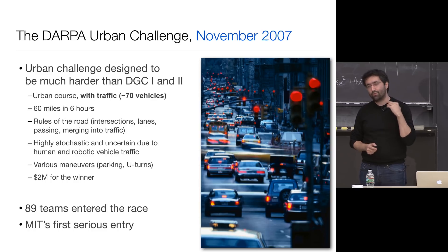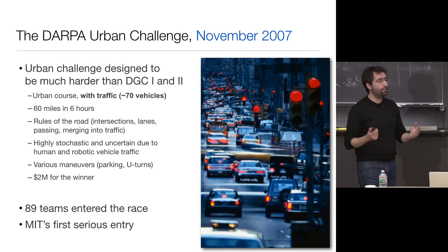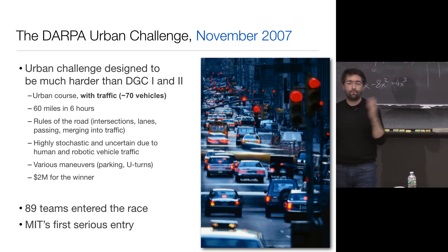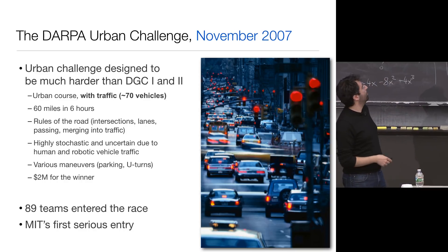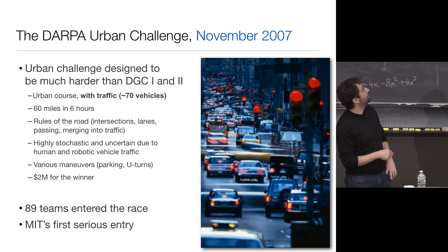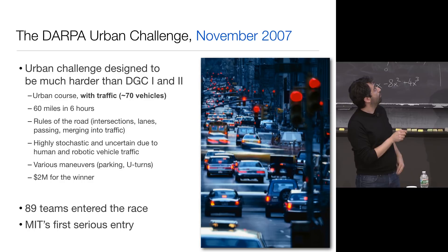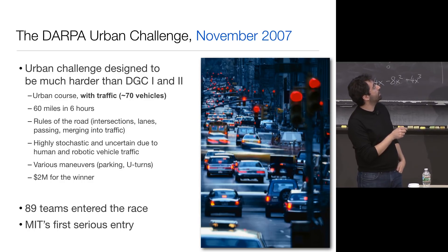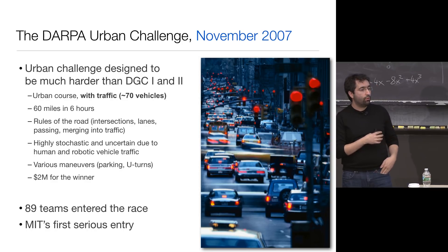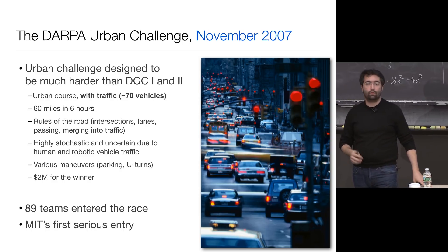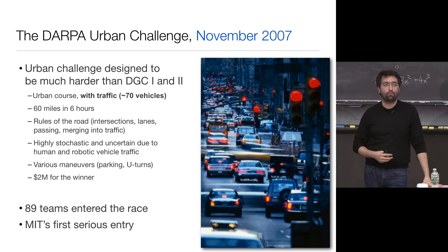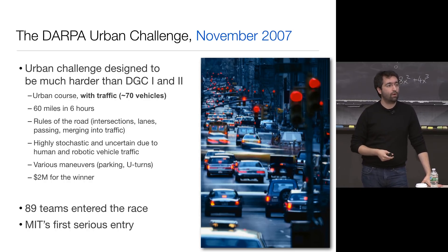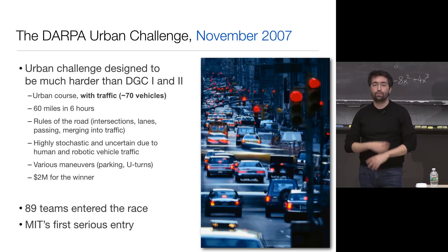People usually believe the DARPA Urban Challenge kind of kick-started all the autonomous vehicles bonanza that's been going on. So DARPA did the Grand Challenge 1 and 2 — this was essentially the third one. The idea was that you would take a street-legal vehicle, instrument it with sensors and computers, and enter this race to drive 60 miles in under six hours in urban traffic with other vehicles driving around.